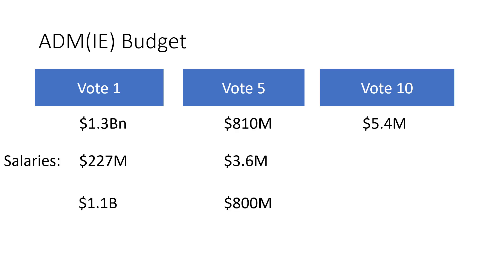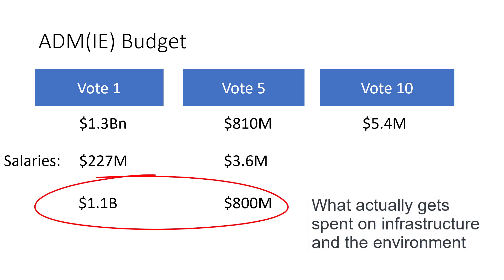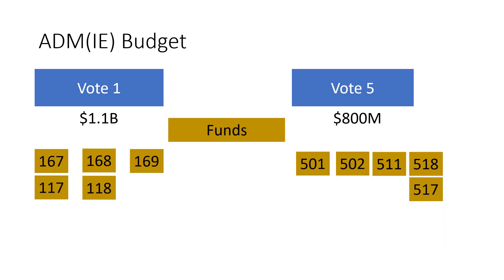That leaves us with approximately $1.1 billion in Vote 1 and $800 million in Vote 5. Within the budget, those Vote 1 and Vote 5 buckets are quite large and encompass most all of the activities done within ADMIE, which is a very complex organization. So within these votes, we have created smaller buckets that each have a specific purpose or intent, and I'm going to briefly introduce some of these funds.